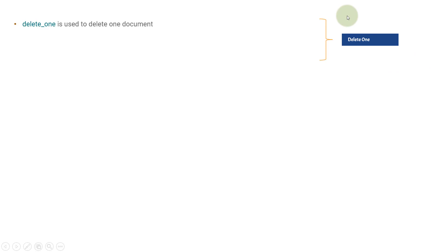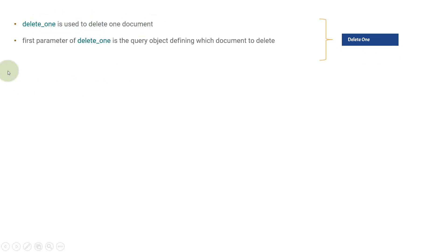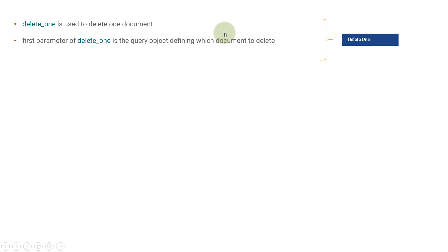If you want to delete one document, MongoDB provides us the ability to delete a single document at once, or you can delete multiple — that is bulk delete. If you want to delete one document, you need to use the delete_one method. Delete_one is used to delete only one document. The first parameter of delete_one is the query object defining which documents to delete — the criteria to filter out the documents — and delete_one will delete only the first document.